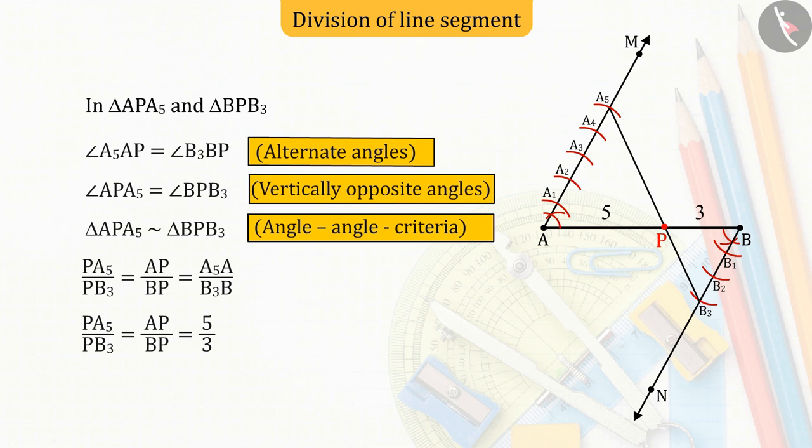So, we can say that point P divides the line AB into the ratio 5:3.